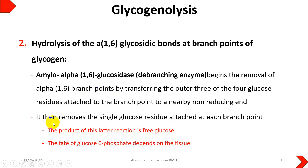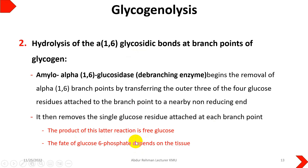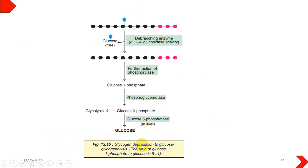Amylo-alpha-1,6-glucosidase removes the single glucose residue attached at each branch point. The product of this reaction is free glucose. So the single molecule forming the branch point is broken down to give free glucose. The fate of glucose-6-phosphate then depends on the tissue. The glucosidase activity of the debranching enzyme releases this free glucose.